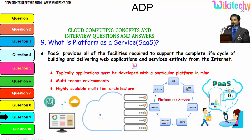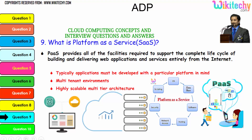Now, what is Platform as a Service? PaaS provides all of the facilities required to support the complete lifecycle in building and delivering web applications and services entirely from the internet. Typically, applications must be developed with a particular platform in mind. It's a multi-tenant environment — highly scalable multi-tenant architecture. PaaS means they give the server with a particular operating system; you are renting an operating system. Whatever software, database, OS, network access, security, and scripting you want — everything is there in Platform as a Service.